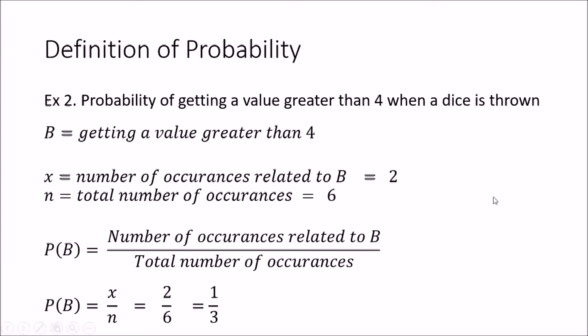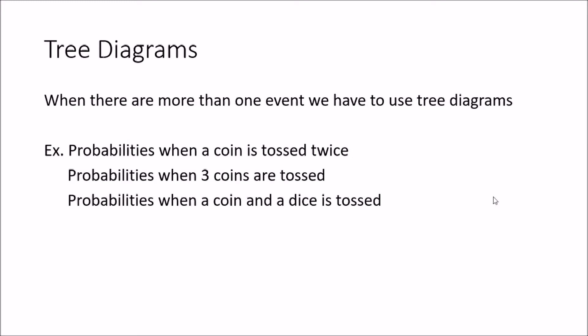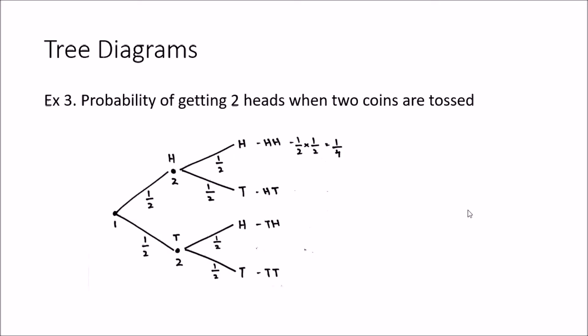Up to now we have been talking about single events — tossing a coin or throwing a dice. But there are instances where you can have more than one event: for example, tossing a coin twice, tossing three coins, or tossing a coin and throwing a dice. We will now look at three diagrams used to find probabilities when there is more than one event, using the third example: finding the probability of getting two heads when two coins are tossed.